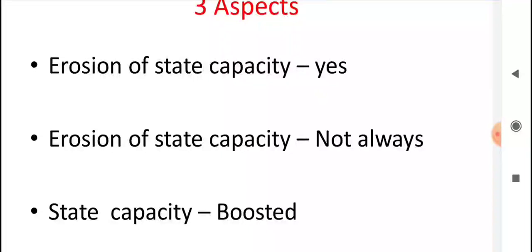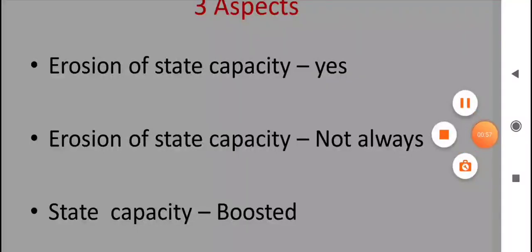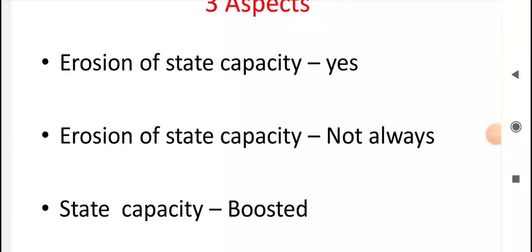The first aspect is that the state's capacity — that is, the ability of that particular country's government — has been eroded because of globalization. When we use the term 'state,' we are addressing a particular country's government. The second aspect is that the state's capacity and sovereignty is not always eroded. The third aspect is that the state's capacity has actually been boosted by globalization.